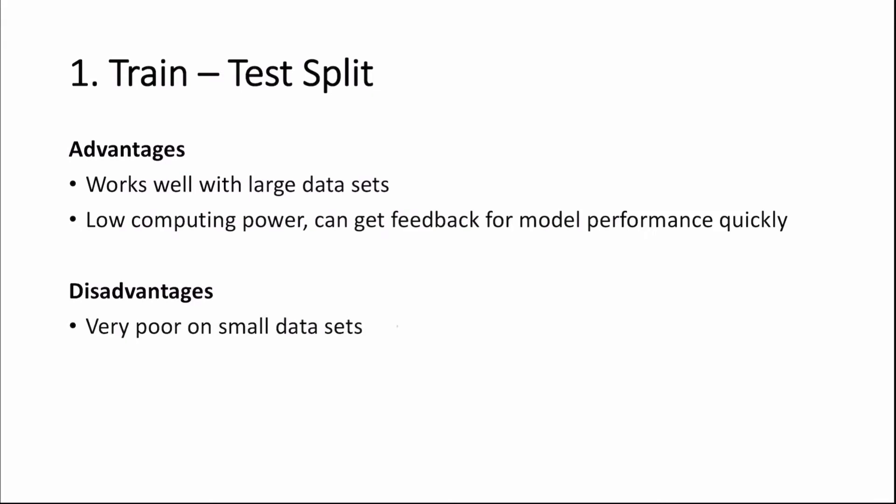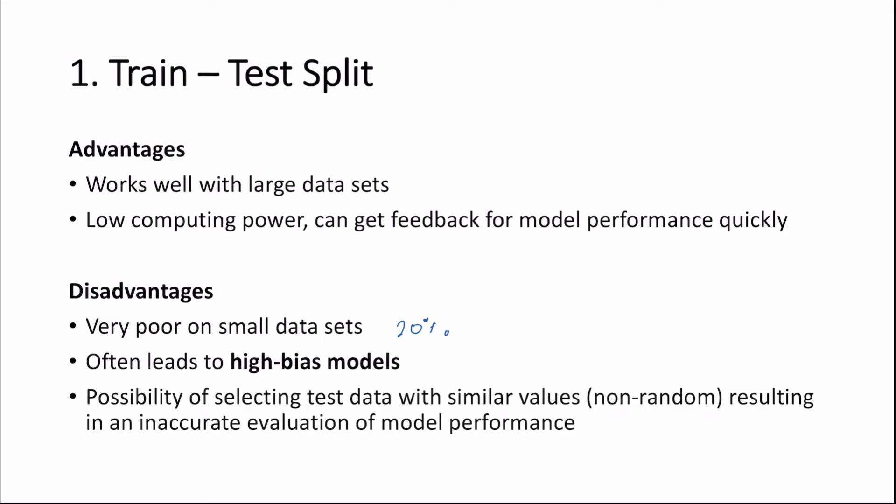Some disadvantages include very poor performance on small data sets. So on the previous slide, our data set only had 20 rows of data. And that 20% that we are using as test data, and we are not using as training data to build our model, could turn out to be vital in capturing the relationship between our inputs and output. So using the train-test-split method often leads to high bias models, especially on small data sets.